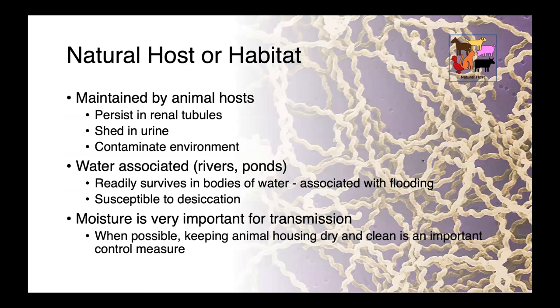Leptospira are maintained by animal hosts — they persist in the renal tubules and are shed in the urine, where they go on to contaminate the environment. Infections are often water-associated, particularly freshwater such as rivers or ponds, and we tend to see outbreaks associated with flooding. Leptospira is very susceptible to desiccation, so from a control perspective, maintaining a clean, dry environment can be a useful tool to prevent transmission.